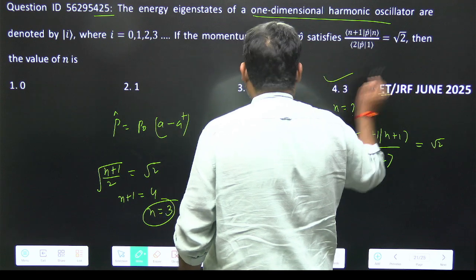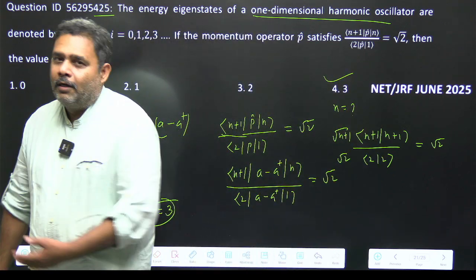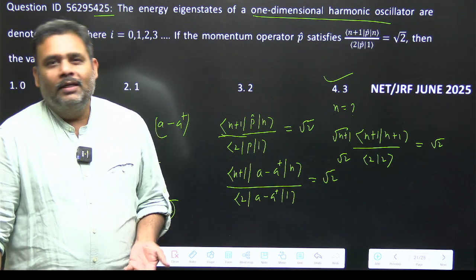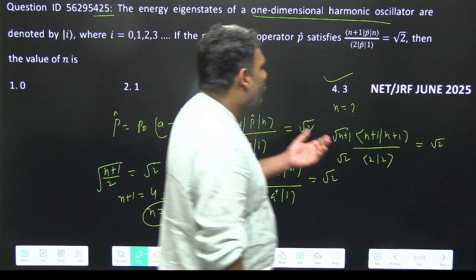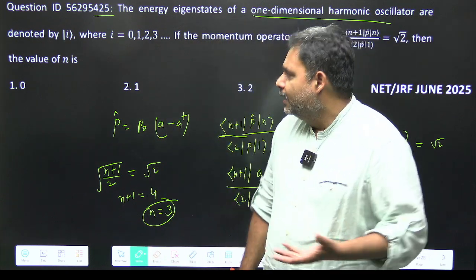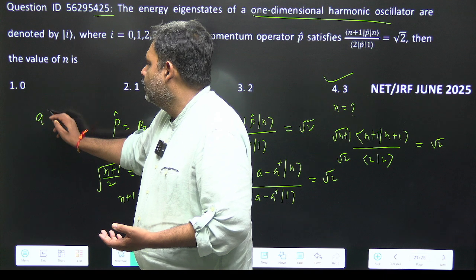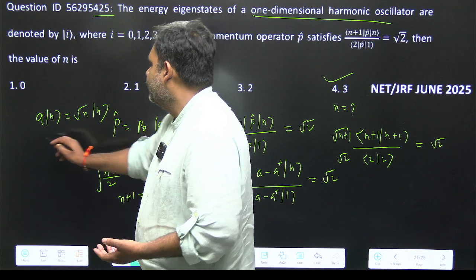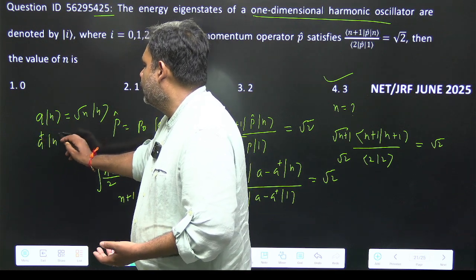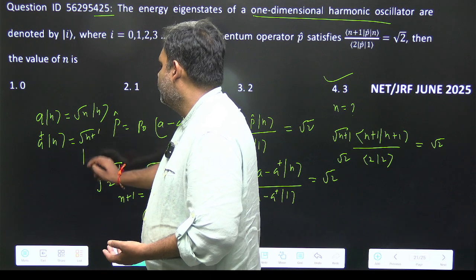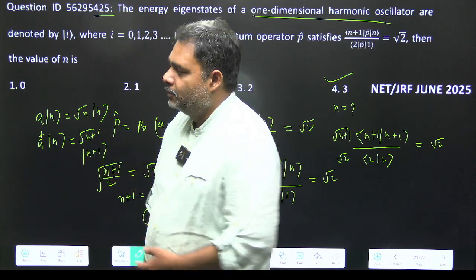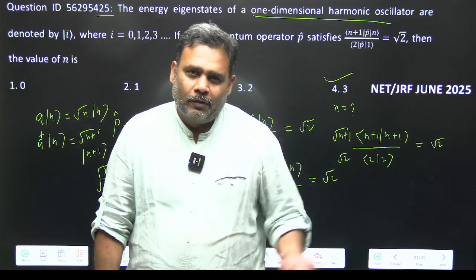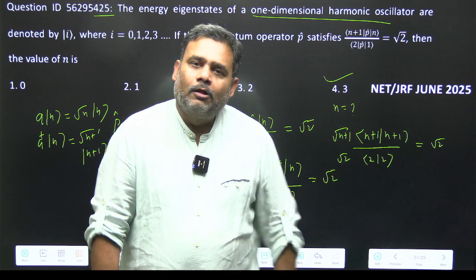So the correct answer is n equals 3, which corresponds to option 4. This is a straightforward question — no high-level calculation needed. If you know how to write the momentum operator p and understand the basic nature of a and a-dagger — that a operating on ket n gives root n, and a-dagger operating on ket n gives root n+1 times ket n+1 — then you can easily solve this problem. Thank you.